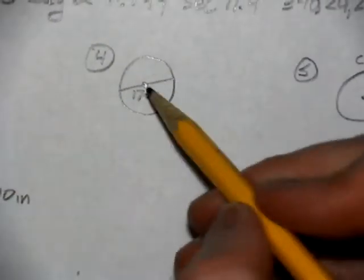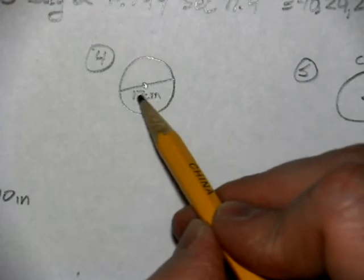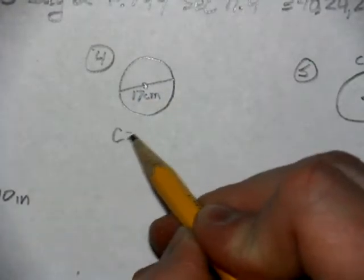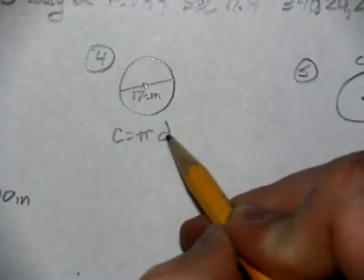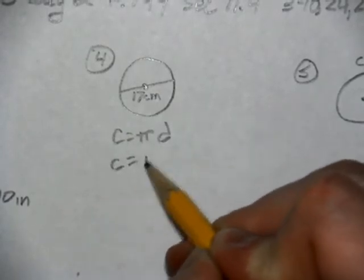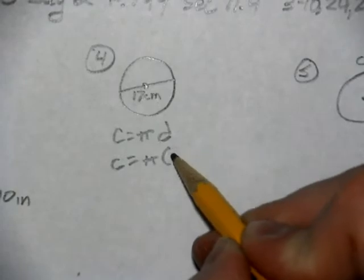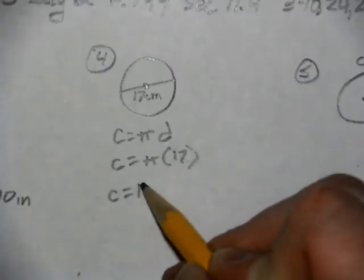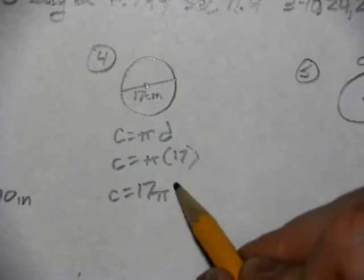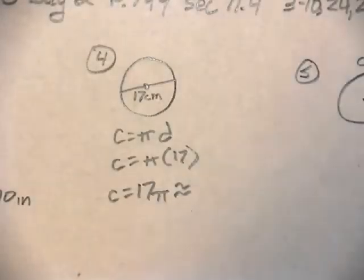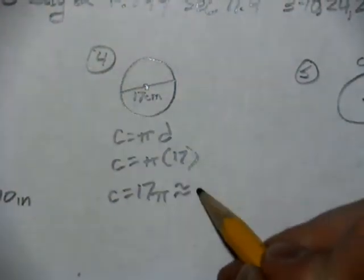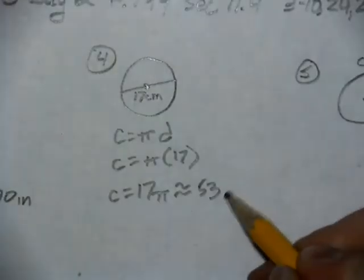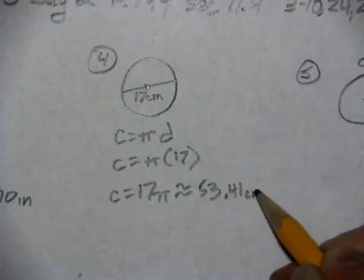Our next question is looking for the circumference if we know the diameter. The diameter is 17, so we're going to use the formula C = πd. D is our diameter and that's 17, so our answer is 17π, which is approximately 53.41 centimeters.